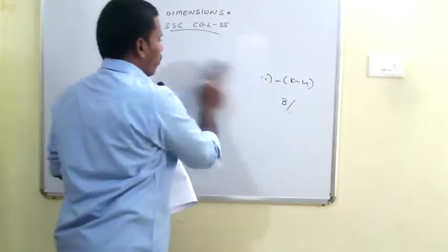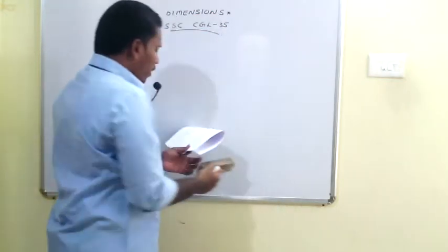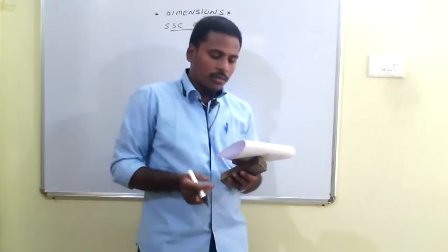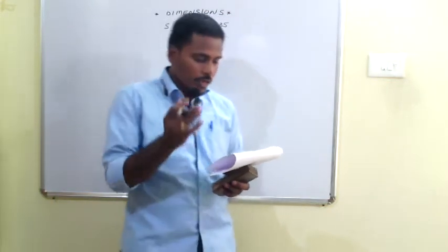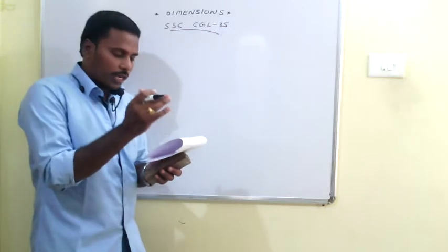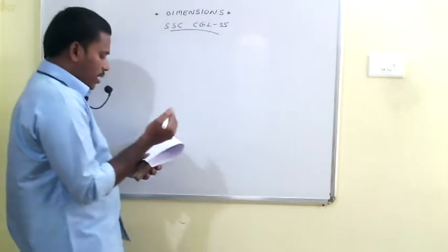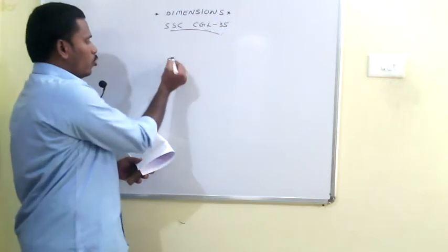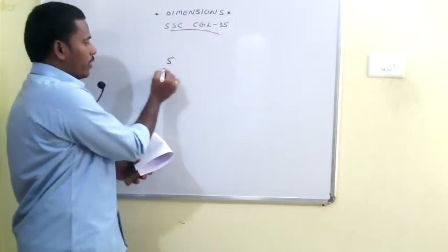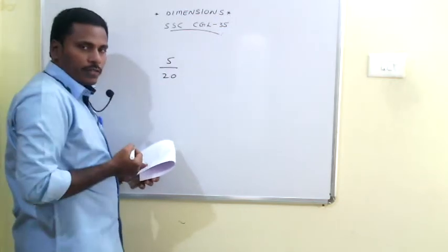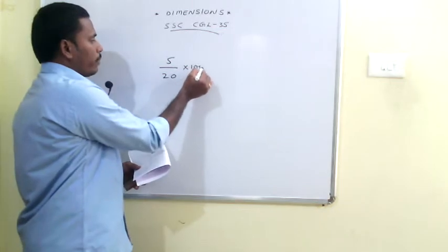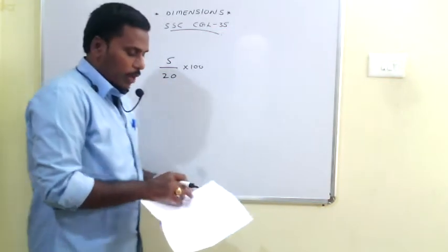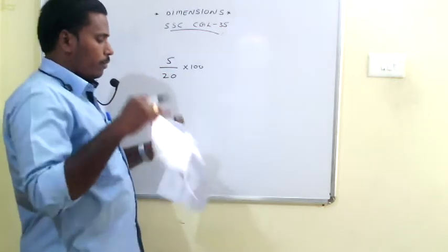The 55th problem: the cost price of 15 tables equals the selling price of 20 tables. We need to find the loss percentage. When the cost price of some 15 articles equals the selling price of 20 articles, the loss percent is calculated as (20−15)/20 × 100 = 5/20 × 100 = 25%. Your answer is 25 percent.